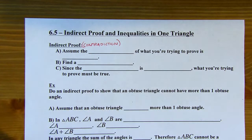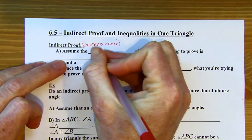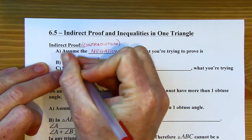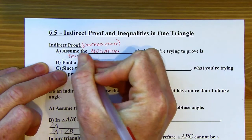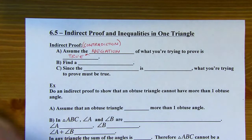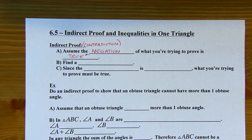There are three steps to an indirect proof. First, you're going to assume the negation of what you're trying to prove is true. The negation has the opposite truth value. For example, the statement 'it is raining' — the negation of that would be 'it is not raining.' 'It's sunny' is not the negation, because it can be cloudy and not raining.